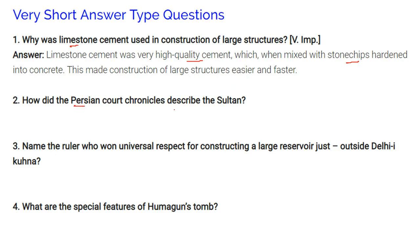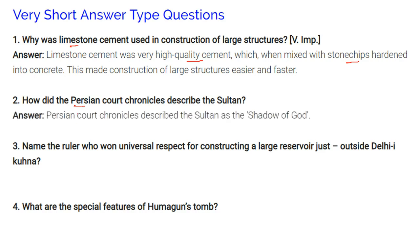The Persian court chronicle described the sultan as the shadow of god — a ruler who won universal respect for constructing a large reservoir just outside Delhi (Kona).